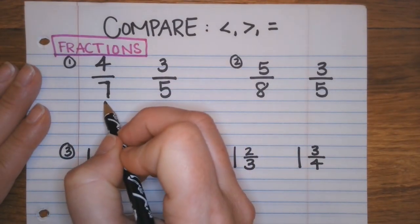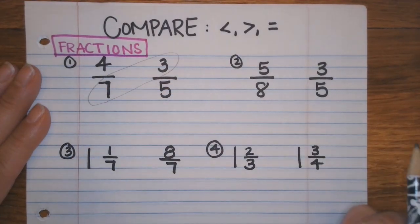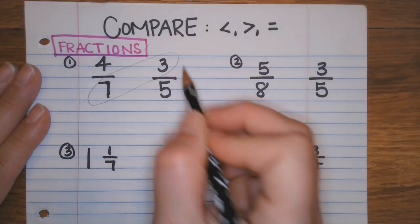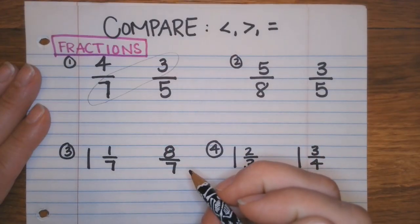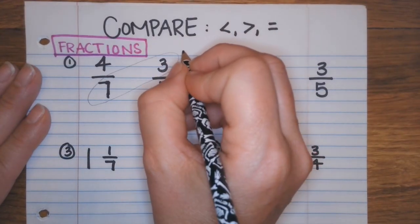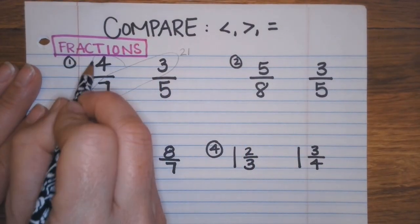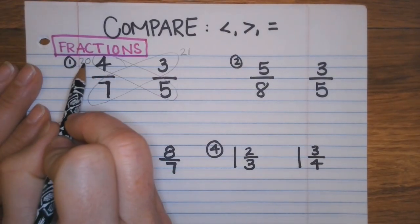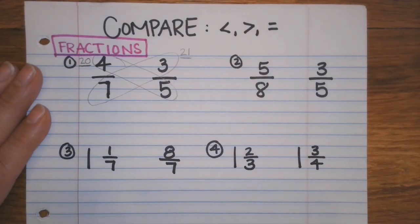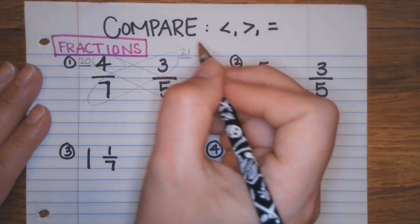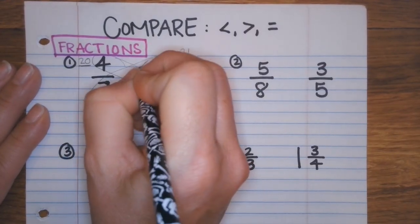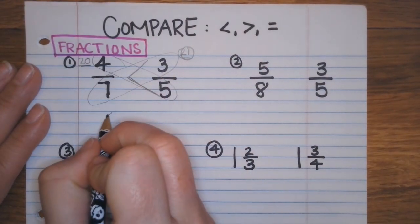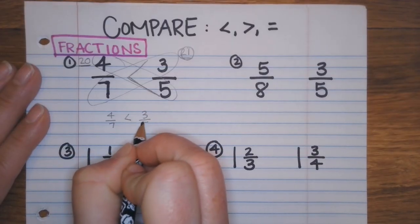Let's look at the butterfly method. With this way, you cross over and you go from bottom up. You need to place the product — the answer that you get from the multiplication — at the top, because that's how you're going to compare them properly. So seven times three is 21, and then four times five is 20. So you would compare the products: 20 and 21. We know that 21 is bigger, so we're going to have our less than sign opened up towards our bigger number. Four sevenths is less than three fifths.